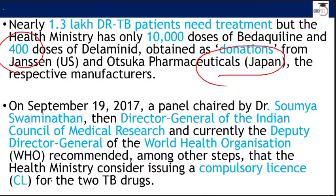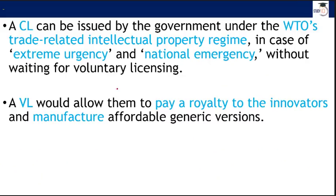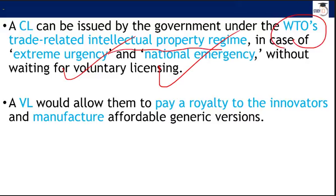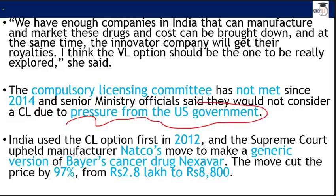As per WTO rules, we can use the clause of compulsory licensing if there is a national or extreme emergency. Both DRTB and normal TB qualify as extreme emergencies given the figures. We can use compulsory licensing to bypass WTO's trade-related intellectual property regime. However, USA is creating pressure on us and stopping us from using this option to protect our own people.